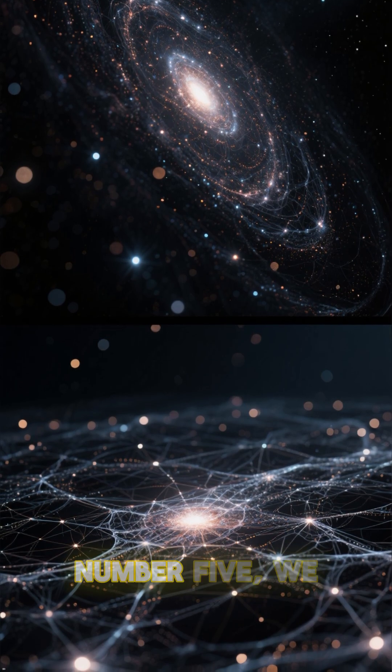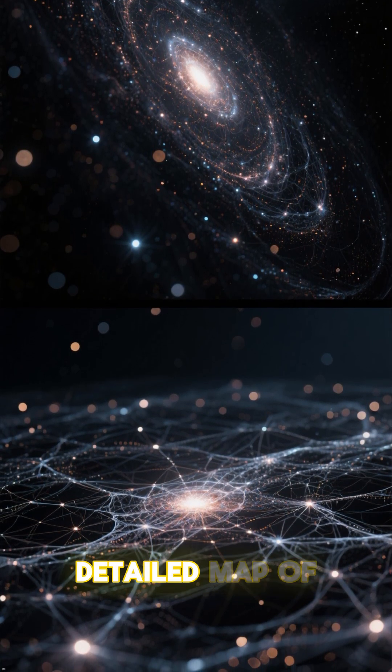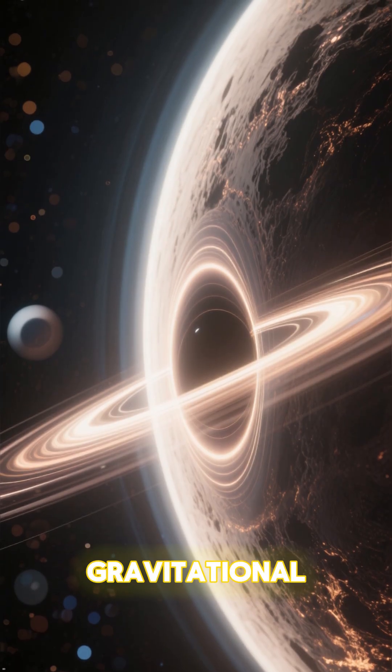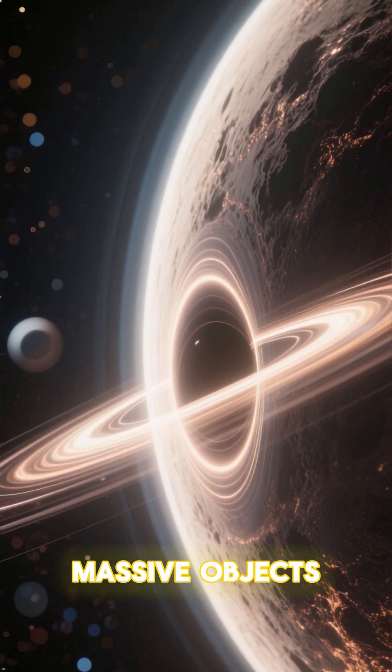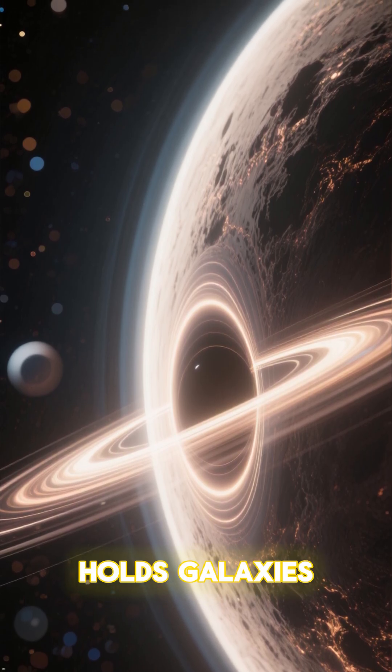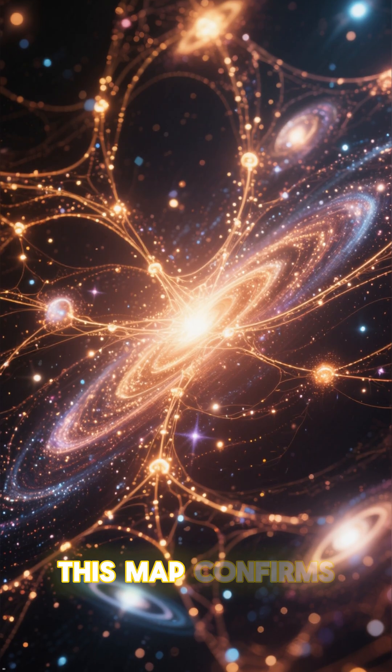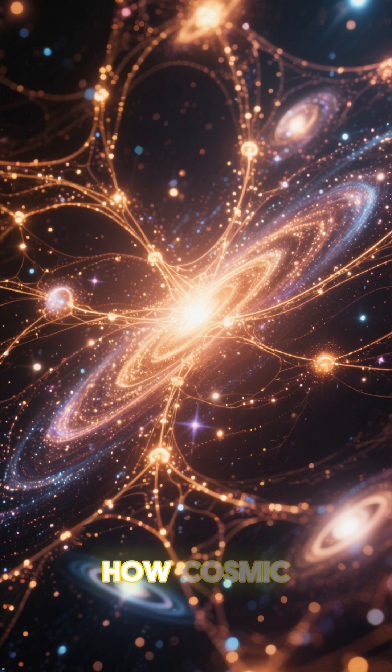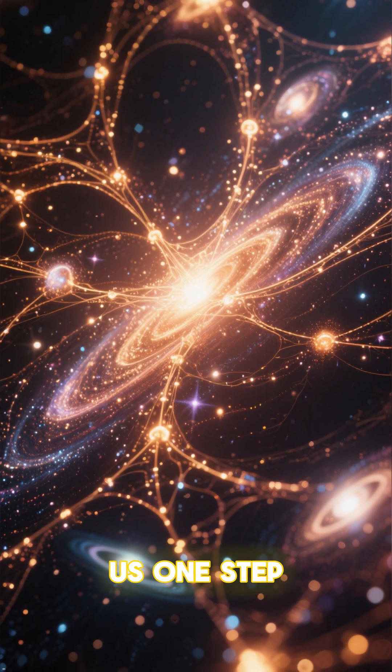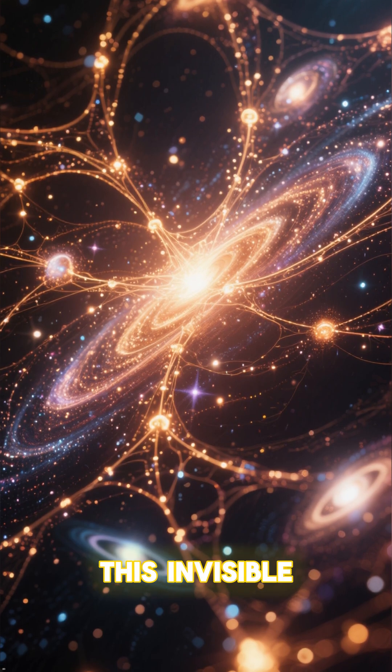And finally, at number 5, we have the most detailed map of dark matter ever created. Using gravitational lensing, where massive objects bend light, scientists have charted the invisible scaffold that holds galaxies together. This map confirms that our current theories about how cosmic structures form are on the right track, bringing us one step closer to understanding this invisible giant.